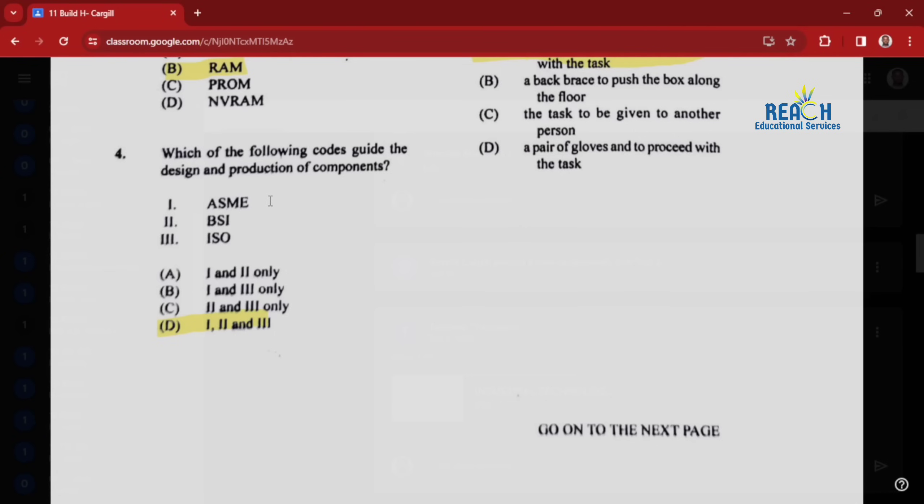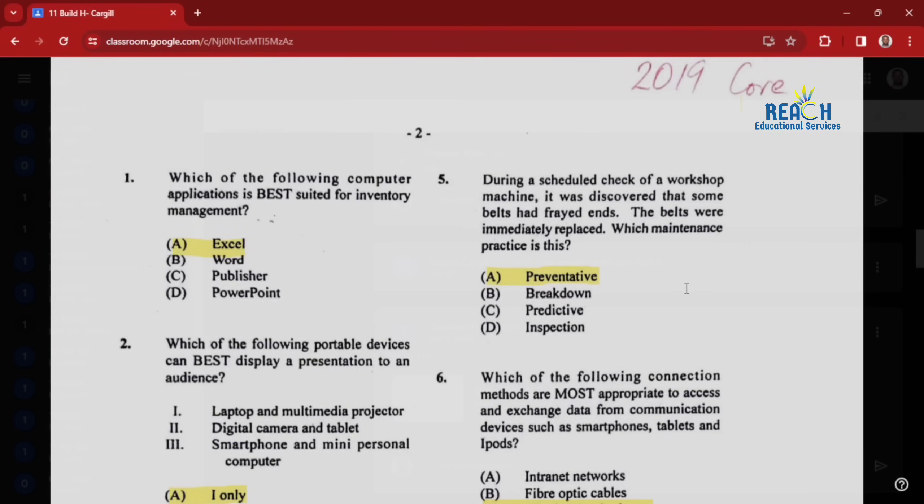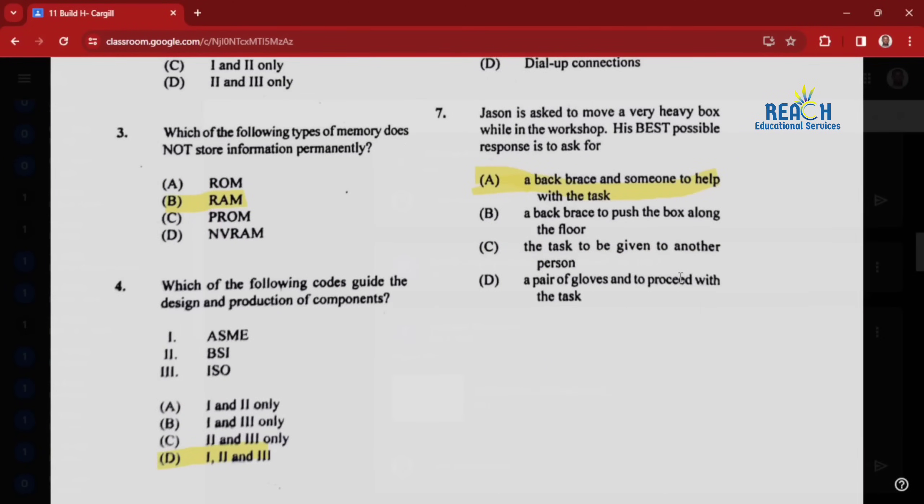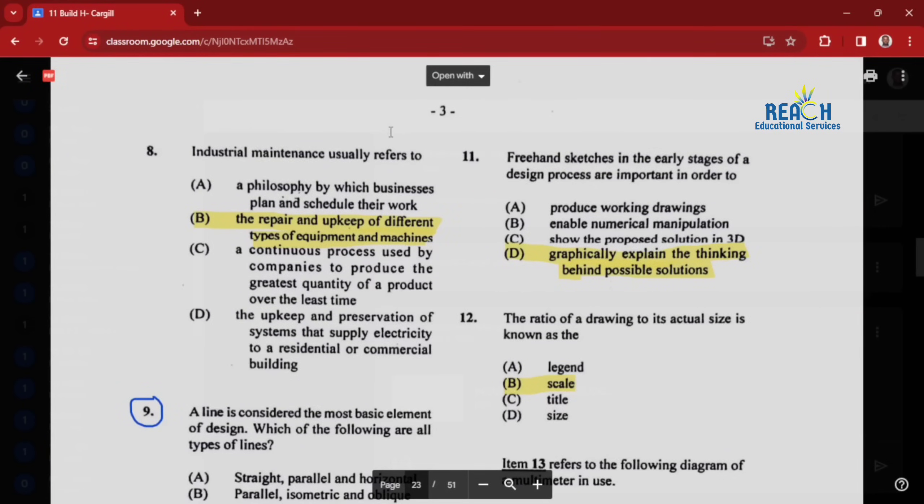It is all three. Question five: during a schedule check of a workshop machine, it was discovered that some belts had frayed ends. The belts were immediately replaced. Which maintenance practice is this? This would be preventative maintenance. Question six: which connection methods are most appropriate to access and exchange data from communication devices such as smartphones, tablets, and iPods? That would be Wi-Fi technologies. Question seven: Jason is asked to move a very heavy box while in the workshop. His best possible response is to ask for a back brace and someone to help with the task. Question eight: industrial maintenance usually refers to the repair and upkeep of different types of equipment and machines.